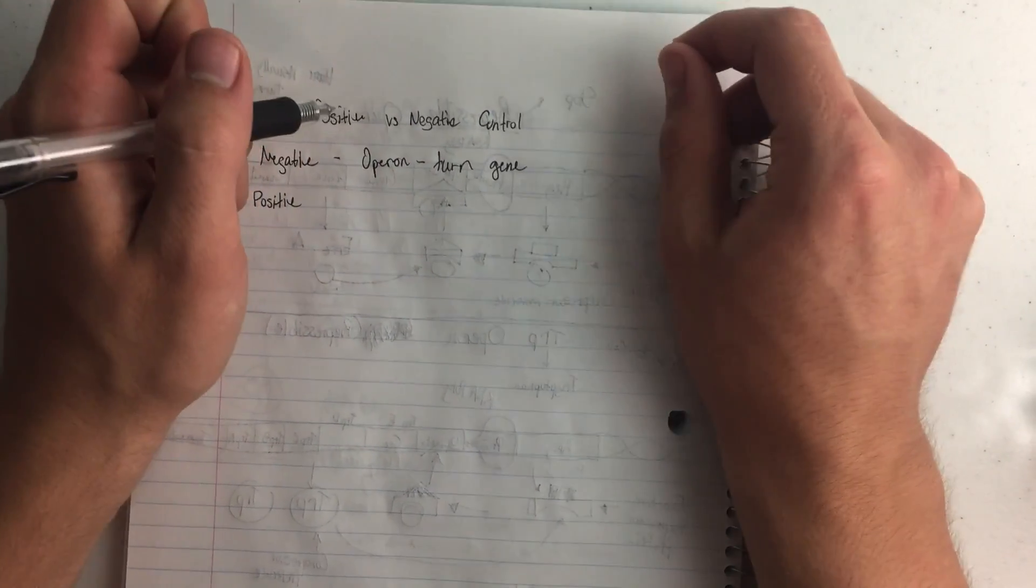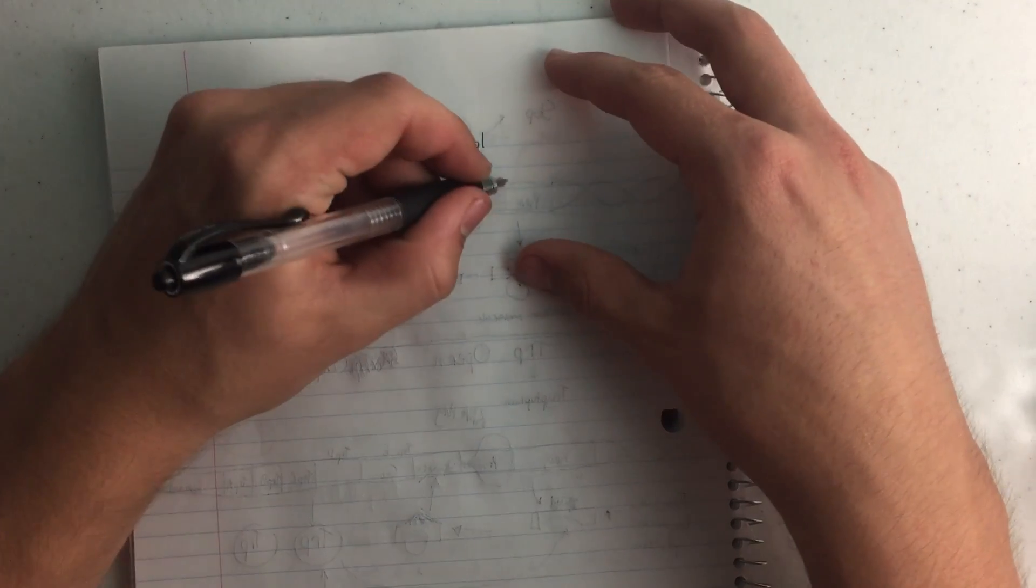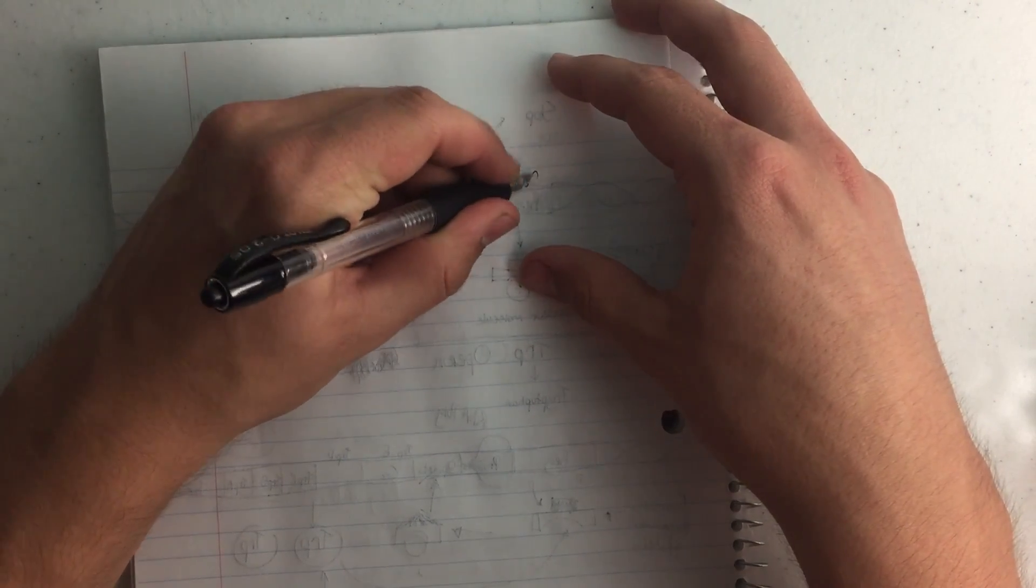So in repressible, it's on and we turn it off. And in inducible, it's off and we turn it on. So both have the gene in an off state.